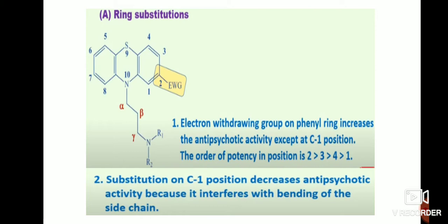For ring substitution, electron-withdrawing groups on the phenyl ring increase antipsychotic activity, except at the C1 position. This indicates that any electron-withdrawing group present on the phenyl ring may increase the activity except at the first carbon position. The order of potency by position is: second, third, fourth, and first — meaning the second position has the most activity.